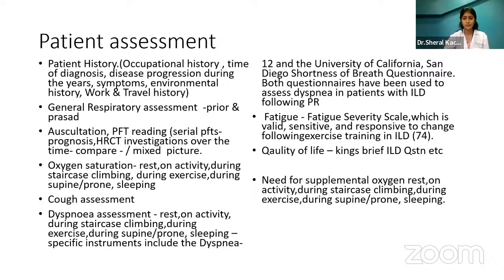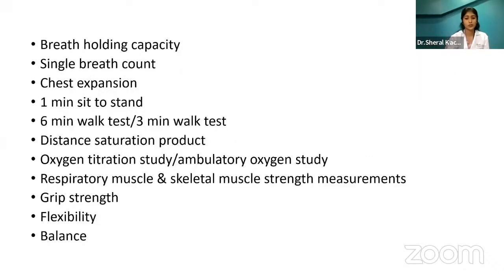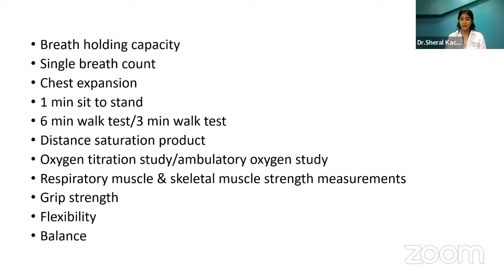Assess the need for supplemental oxygen at rest, on activity, during staircase climbing, and during exercise. Measure the level of supplemental O2 required during different activities. There is also breath-holding capacity and single breath count to assess. Assess chest expansion — there is evidence that chest expansion correlates with the amount of fibrosis and lung compliance. If chest expansion is reduced, lung compliance is reduced. You can correlate accordingly.